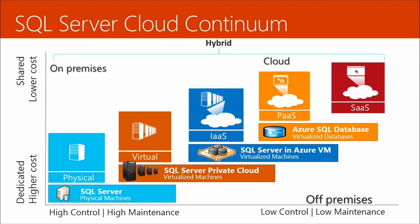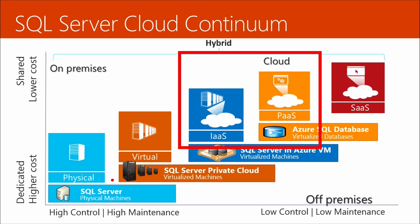Before getting specific, let's look at the big picture continuum. We're going to focus on the IaaS and PaaS parts. Going from left to right, first you have your physical server which you may have had on-premises. Some organizations set up a private cloud with virtual servers. But most of us are probably using the public cloud, so we could do IaaS or PaaS.